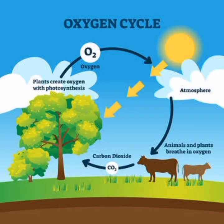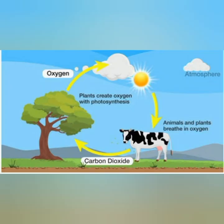Our next topic is the oxygen cycle. The amount of oxygen present in air is 21%, and oxygen is balanced in nature. Oxygen is removed from the atmosphere by the process of respiration and burning, and it is added to the atmosphere by the process of photosynthesis. This natural cycle of consumption and release of oxygen is called the oxygen cycle.